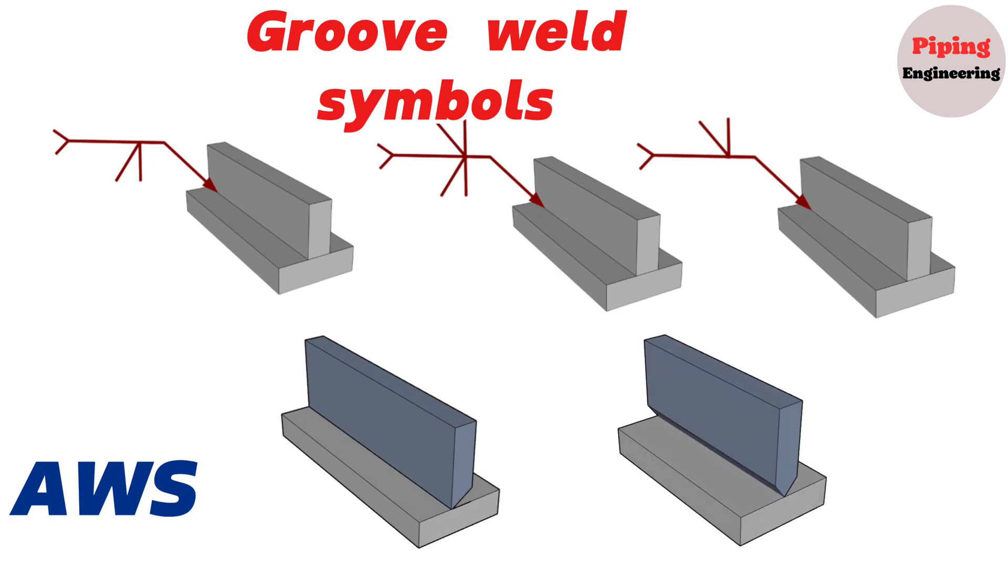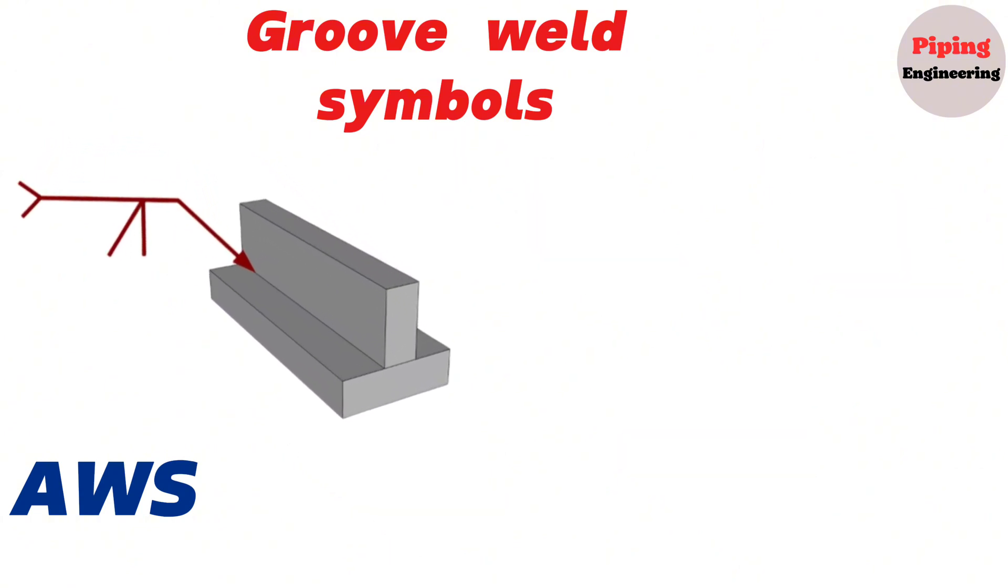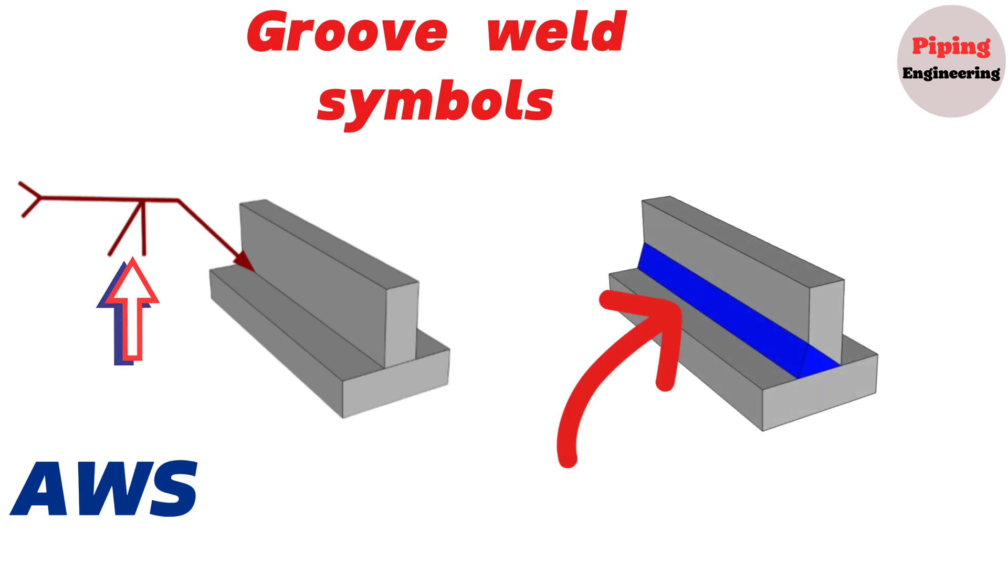Like the basic fillet weld symbol, the groove weld symbol consists of a reference line, an arrow line, and the tail.